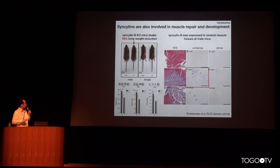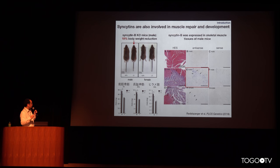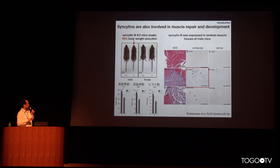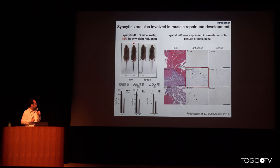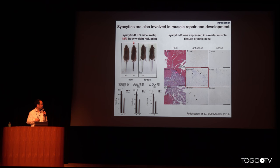This is syncytin B — it's a little different from human syncytin, but the function itself is very similar. It's also reported to be involved in placental development. Knockout mice of syncytin B showed decreased body weight compared to wild types, indicating that syncytin B is important for developing or repairing muscle tissues.